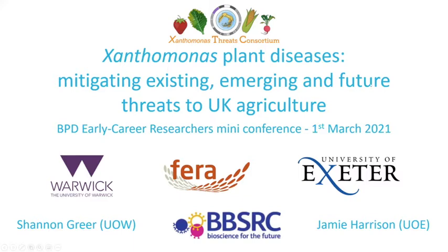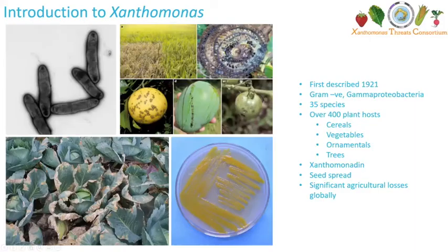So a very brief introduction. Xanthomonas was first described in 1921 as gram-negative gamma proteobacteria, and as you can see in the top corner here, they're rod-shaped with one polar flagellum.